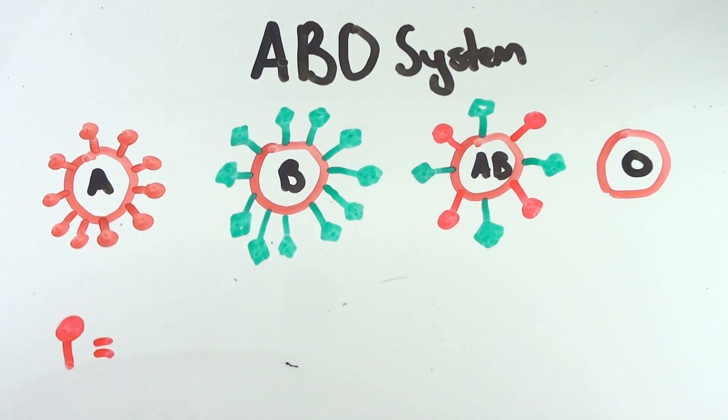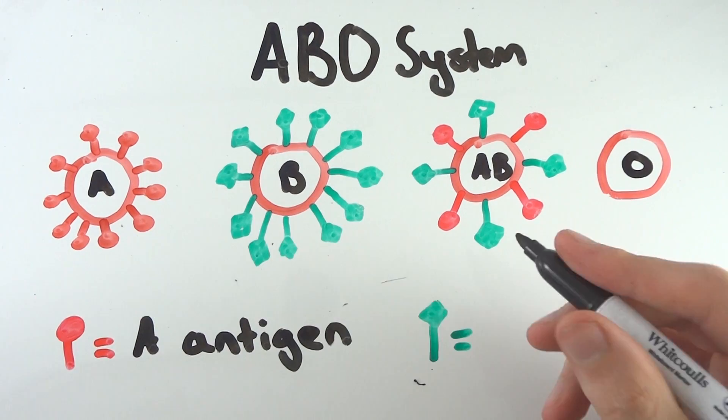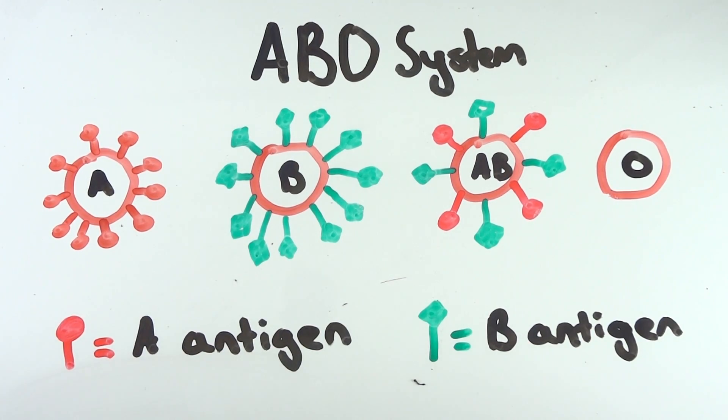Those in blood group AB have A and B antigens on their red blood cells but don't have anti-A or anti-B antibodies in their plasma. Group O has no antigens but has both anti-A and anti-B antibodies in their plasma.